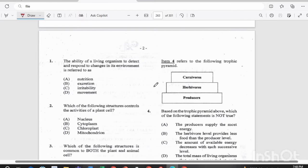Question one. The ability of a living organism to detect and respond to changes in its environment is referred to as A. Nutrition, B. Excretion, C. Irritability, or D. Movement. The answer there is C. Irritability.